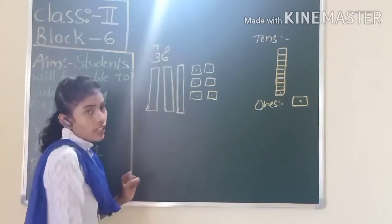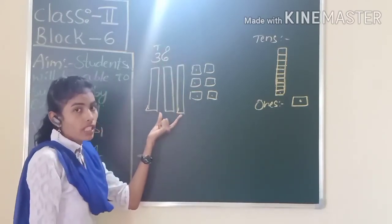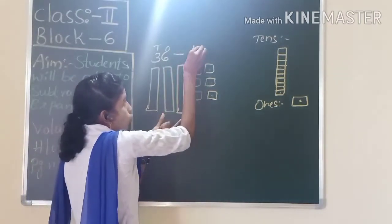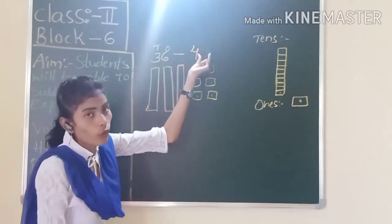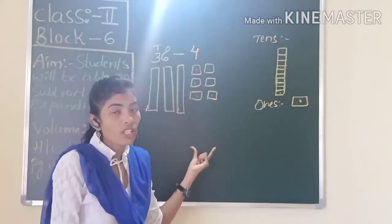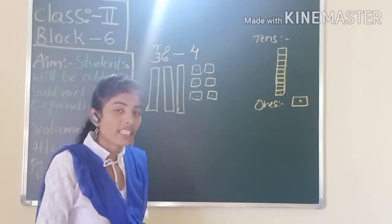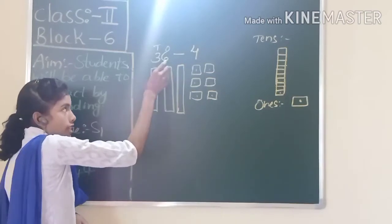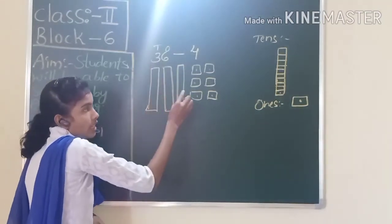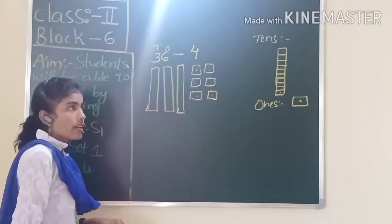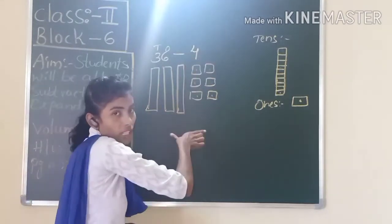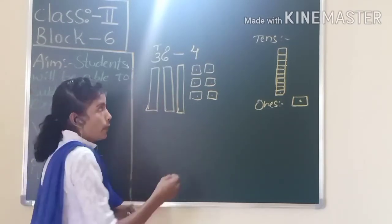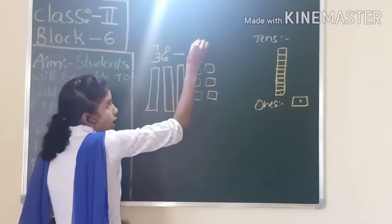Today I am going to do subtraction. I am going to subtract numbers using place value blocks. If I want to subtract four — 36 minus 4 using place value blocks — how can we subtract? First we have to represent the first two-digit number using place value blocks. Then we have to subtract this number from the place value blocks. Subtraction means we have to cut those many numbers. So first we have to write place values.